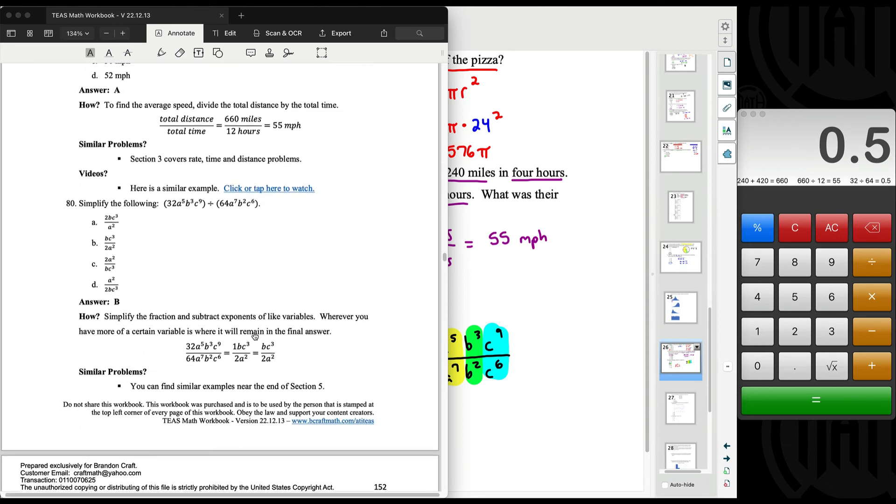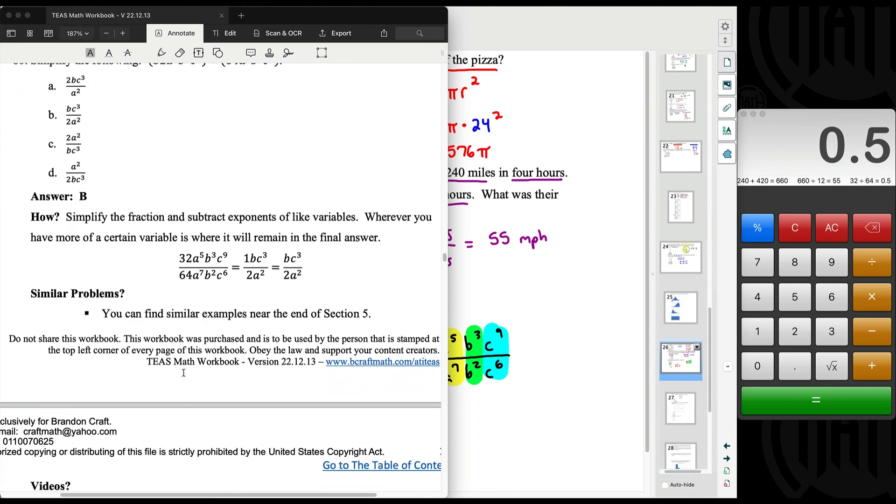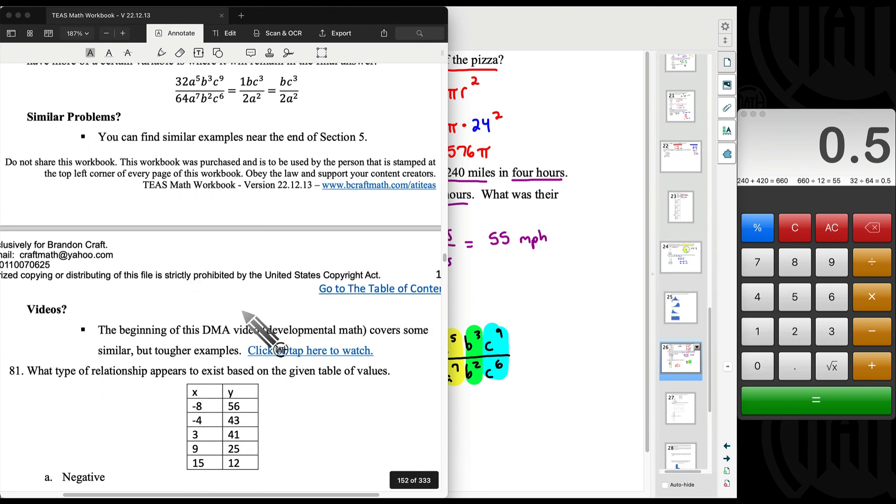Then number 80, we did turn this into a fraction. And I mentioned wherever you have more of a certain variable is where it will remain in the answer. I was asking you where did we have more a's, where did we have more b's, where did we have more c's? We even eliminated our answer choices based on that. And then just bear in mind being able to simplify fractions with just numbers like the 32 over 64. Look at the end of section 5 for additional examples there. Section 5 mainly deals with the equations but I did include some of these division problems at the end of section 5. I mentioned just a few moments ago about DMA developmental math, which are some videos that I used in an older course that I taught at the college that I work at. The beginning of this video here has some of those examples but they can be slightly tougher but still worth watching.